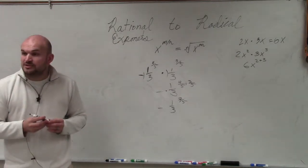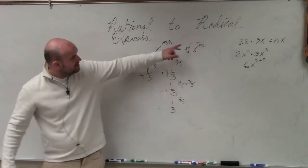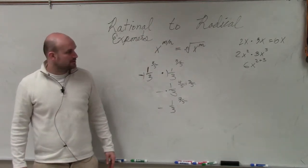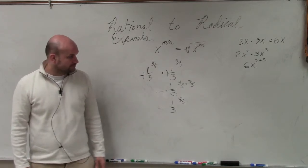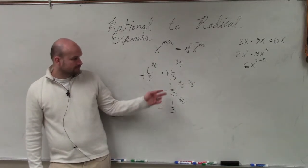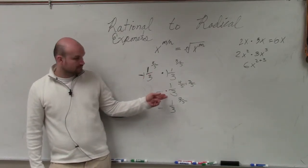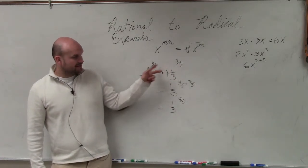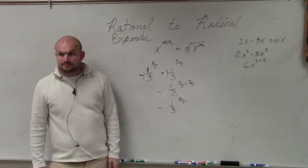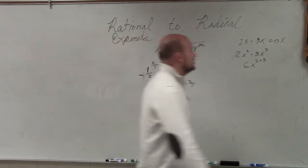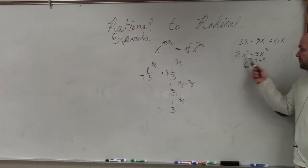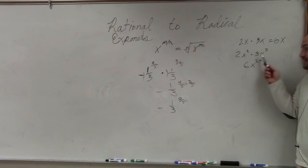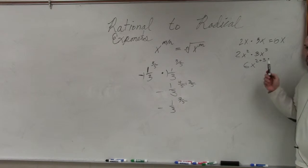All I did was add the powers. We can rewrite that as a radical — I just want you guys to get some practice with that. When you multiply two exponents with the same base, you simply multiply the numbers in front, which keeps the same base, which is x. And then you add the powers 2 and 3, which gives you 5.